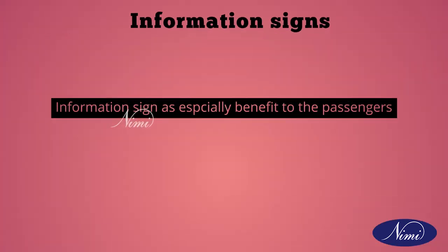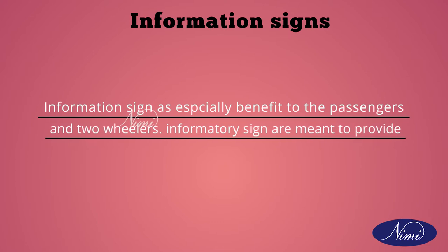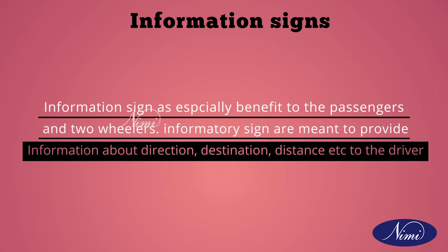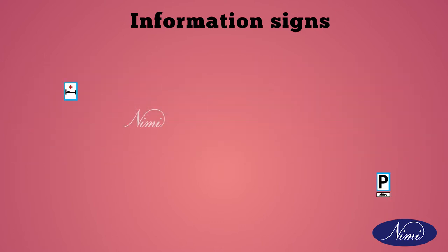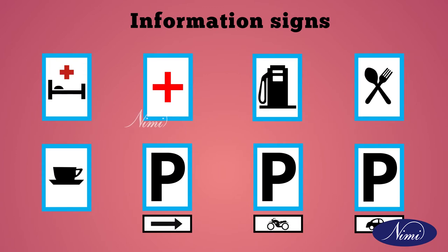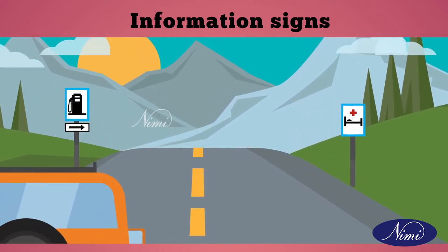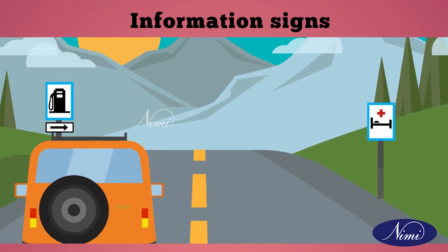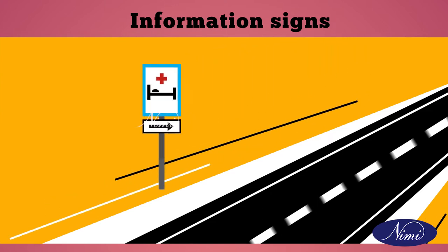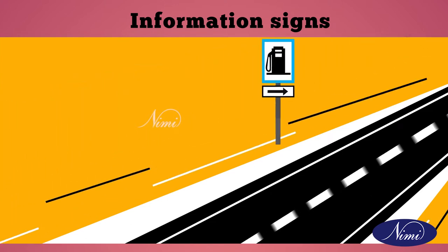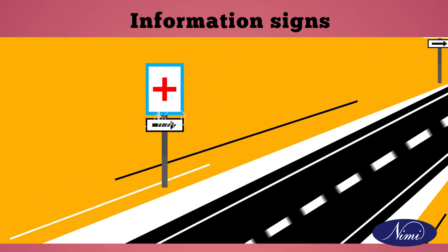Next are informatory signs, which especially benefit passengers and two-wheelers. Informatory signs provide information about directions, destinations, distance, etc. to the driver. Information signs are normally blue in color. For example, we usually see sign boards on the side of the road stating that a petrol bank is ahead in 500 meters, or showing the direction to a hospital or destination. This is most beneficial for first-time travelers on a particular route.